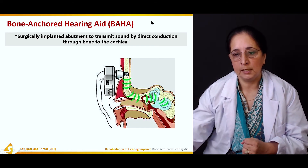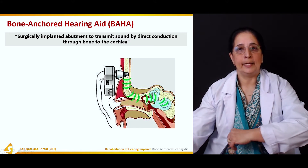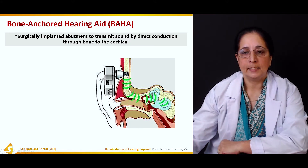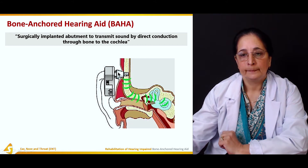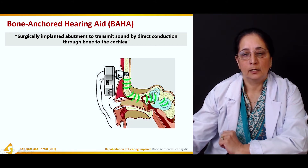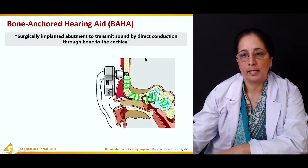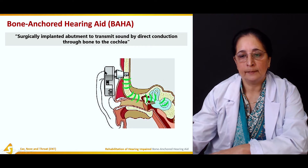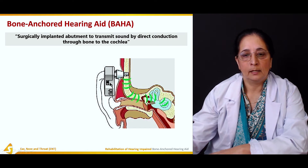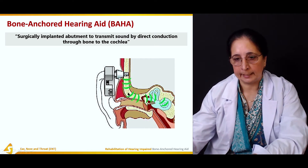As you can see in the picture, this is the hearing aid that is implanted to the bone to transmit sound by direct conduction through bone to the cochlea — this is the implanted bone anchored hearing aid.